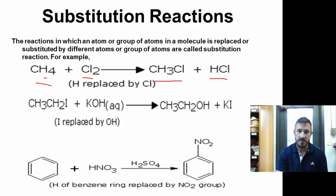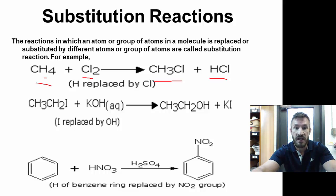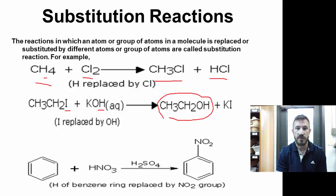You could also have something replaced by another group. For example, we have an OH replacing. We end up with a compound at the end with CH3CH2OH, and then potassium iodide.